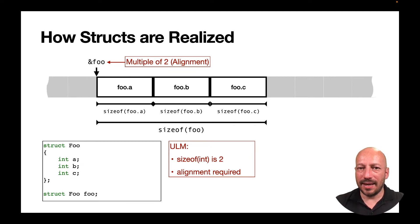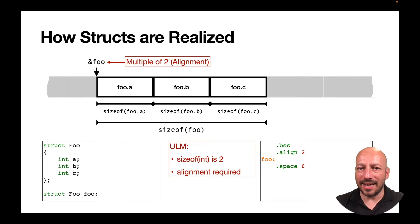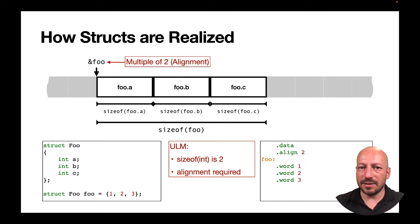The WHIMSY compiler must ensure the address of struct foo is at a multiple of two. For a global uninitialized struct variable, the compiler generates code placing it in the BSS segment: a label aligned, followed by zero-initialized bytes — in this case six bytes. If the global variable is initialized, the assembly code goes in the data segment, with a label followed by the initial values of the members.